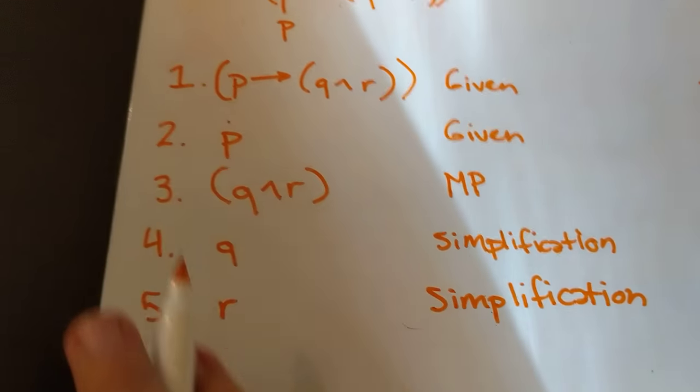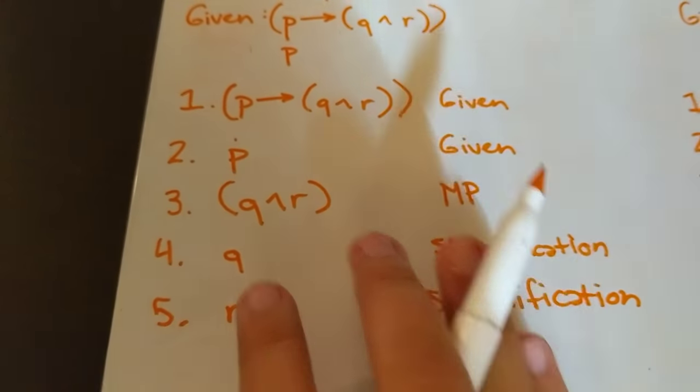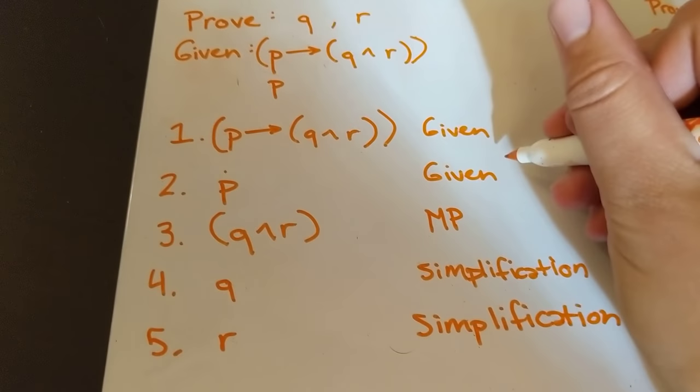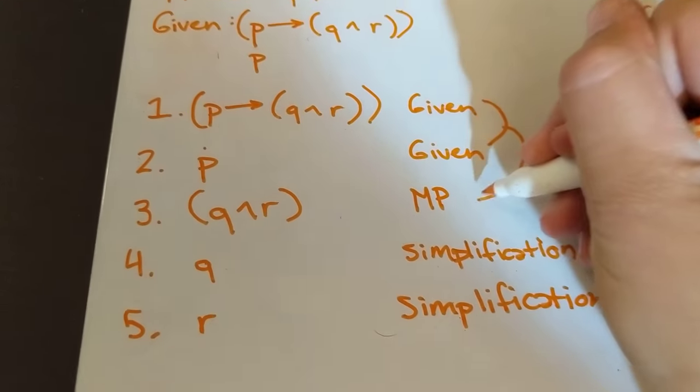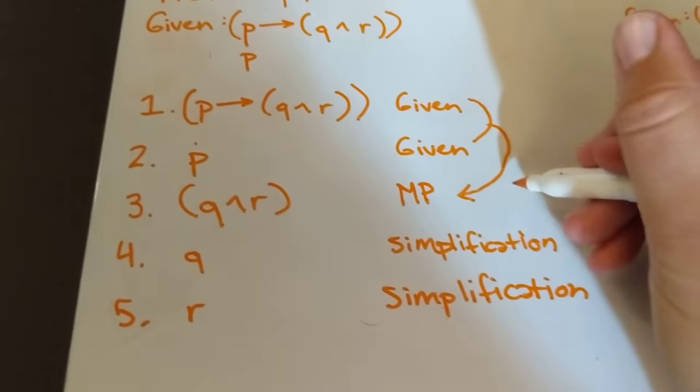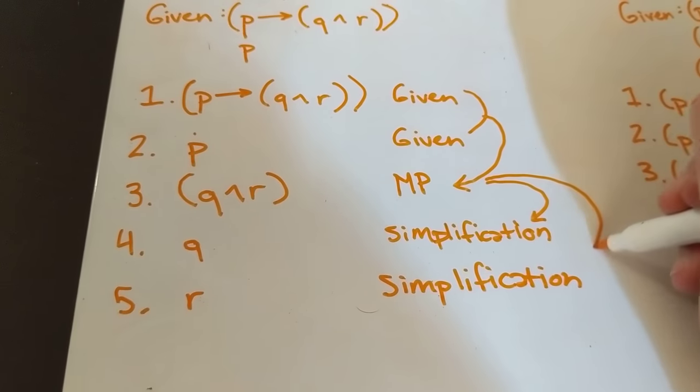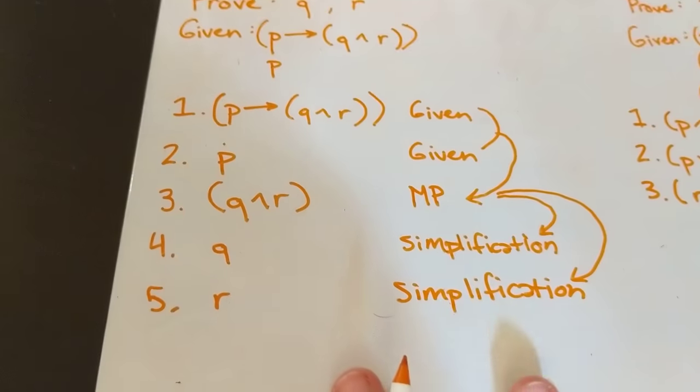So sometimes these proofs can look a little bit confusing because it's a little unclear what lines are going into each inference. So for example, we are taking these two lines and putting them together for this one. And then for this one, we just take this line and use it for simplification. And for this one, we're taking this line and using it for simplification. So it can get a little bit confusing to read.